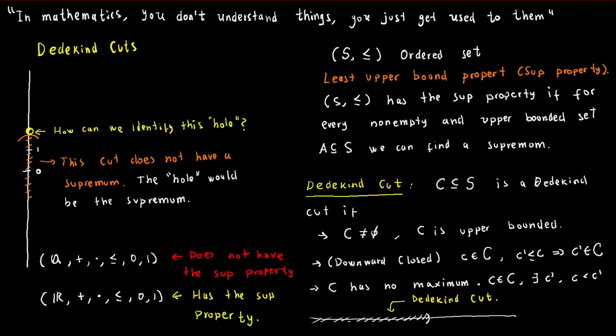The key difference between the rational numbers and the real numbers lies in their supremum properties. While the real numbers have the supremum property, the rational numbers do not. This is similar to how the integers have the property of having additive inverses, while the natural numbers do not have that property.